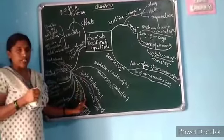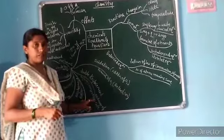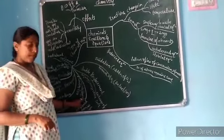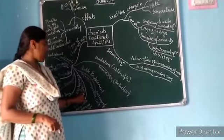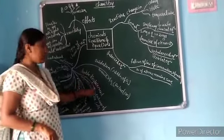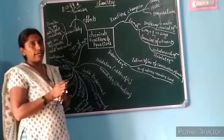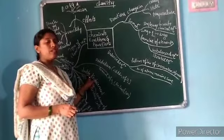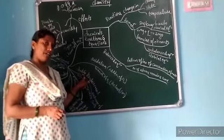Displacement reaction: a more reactive element displaces the less reactive element from a compound. For example, iron displaces copper from copper sulfate solution and forms ferrous sulfate and copper. Double displacement reaction: exchange of ions between compounds is called a double displacement reaction — it also forms an insoluble substance called a precipitate, so it is also called a precipitate reaction.